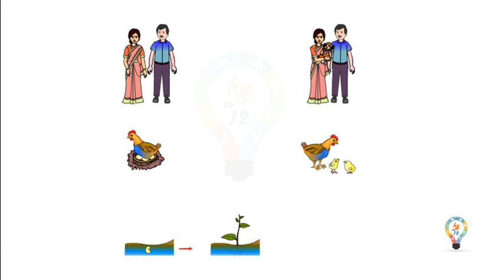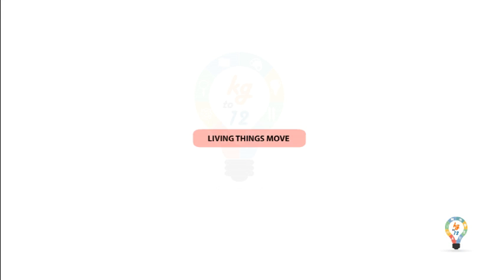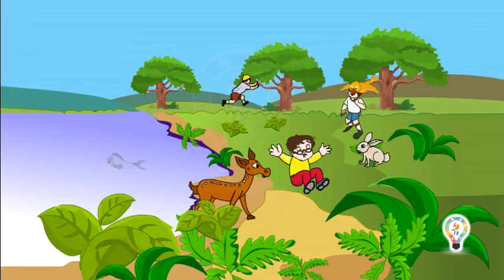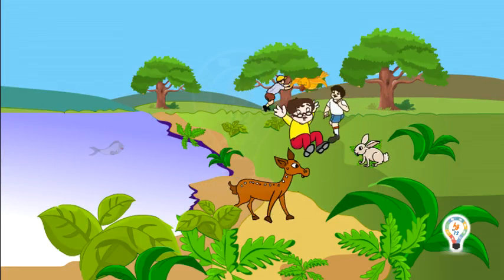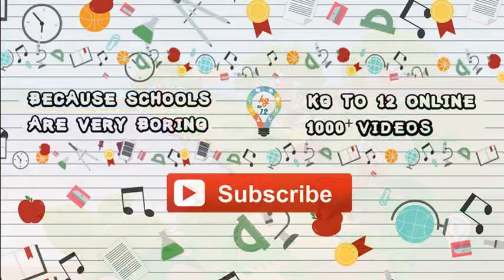Living things reproduce. All living things reproduce — they either give birth to babies or reproduce by laying eggs. Most plants grow from seeds. Living things also move. Birds fly, animals walk, fish swim, and plants also move.